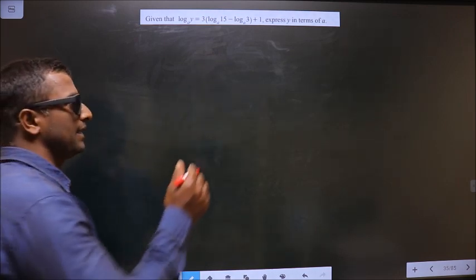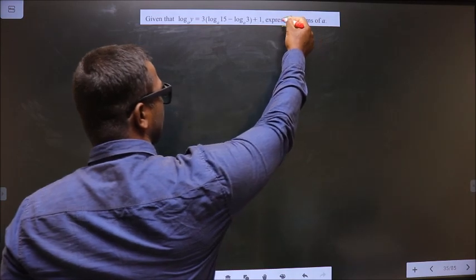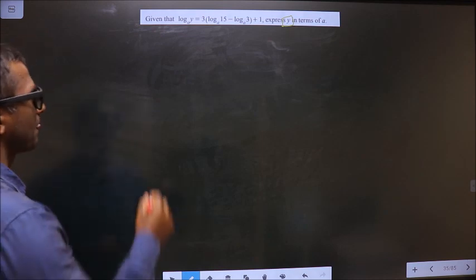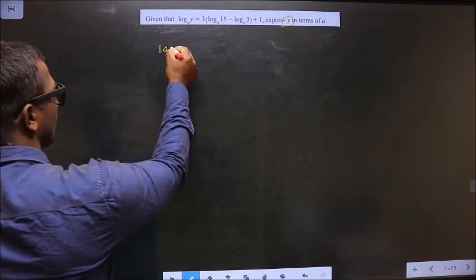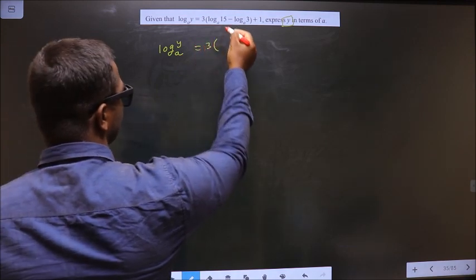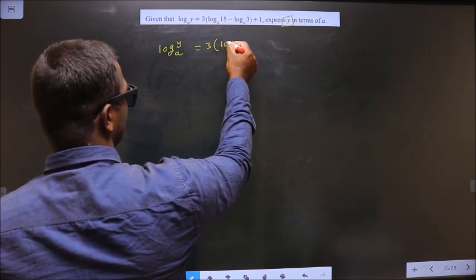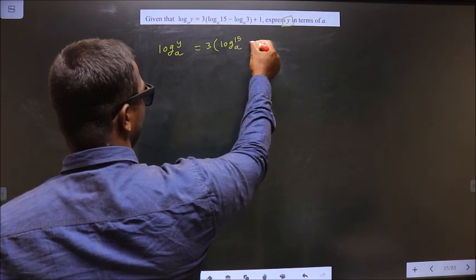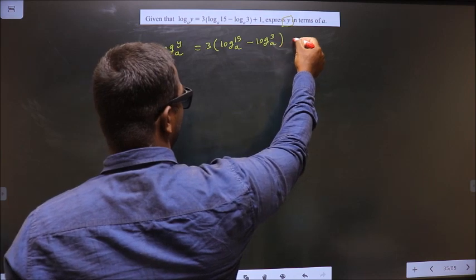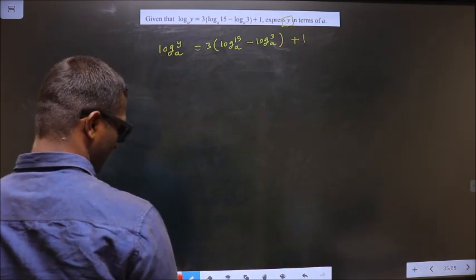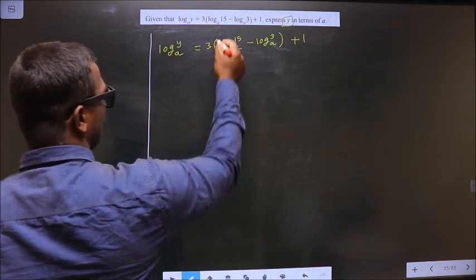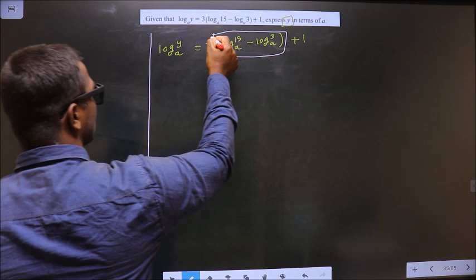So we need to make y the subject. First, the given equation is log y base a equal to 3 log 15 base a minus log 3 base a plus 1.